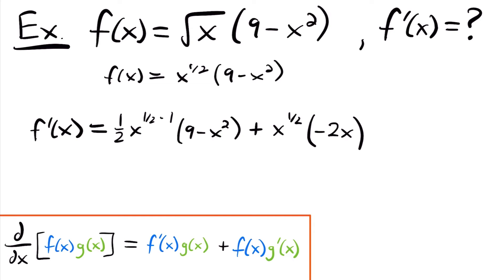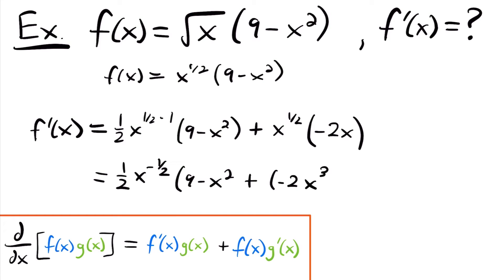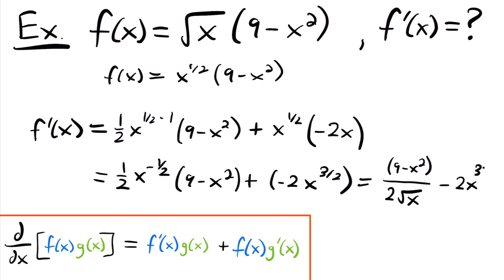Now let's simplify. We have one-half times x to the negative one-half power times 9 minus x squared, plus — multiplying x to the one-half by negative 2x — negative 2 times x to the three-halves power, because one-half plus 1 equals three-halves. Simplifying further, we bring the quantity to the top of the fraction and move the variable to the denominator to get a positive exponent: (9 minus x squared) over (2 times the square root of x), minus 2x to the three-halves power.